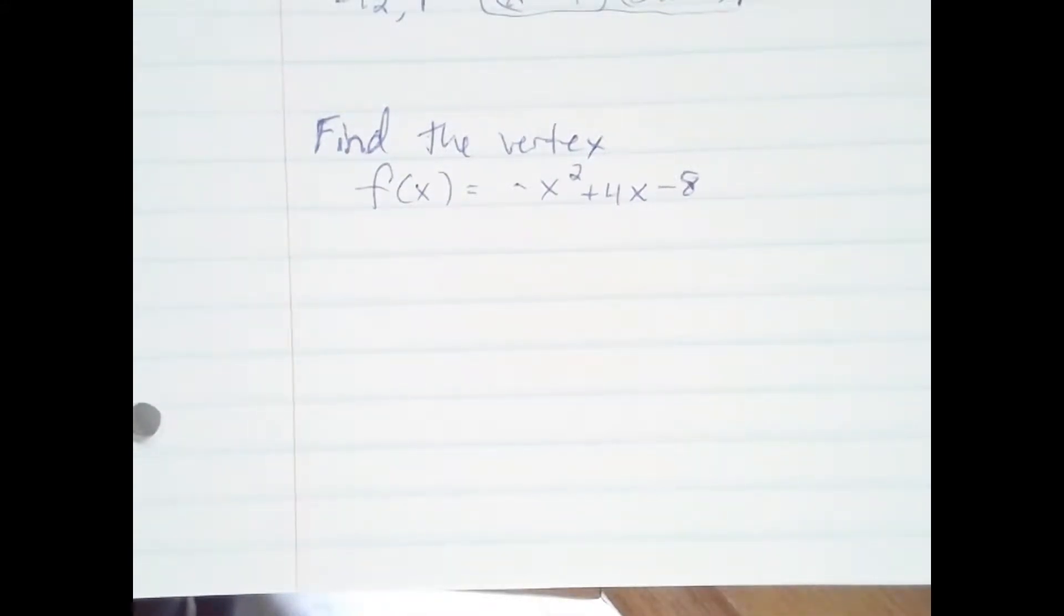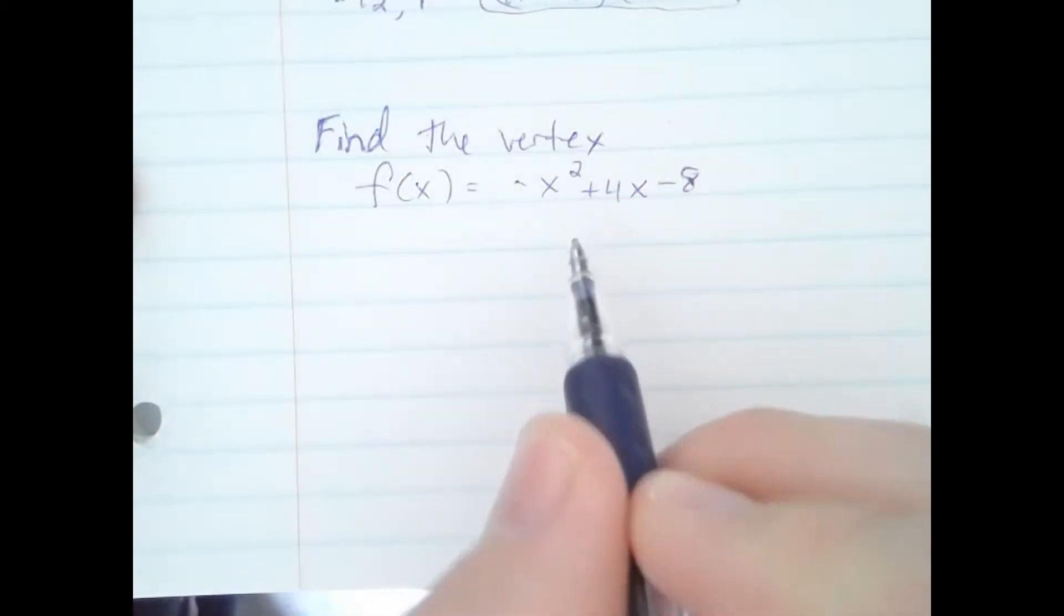Okay, in this problem we're going to find the vertex of the function f(x) equals negative x squared plus 4x minus 8.